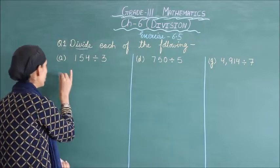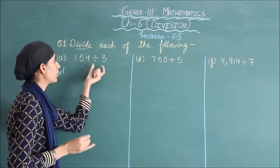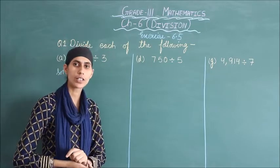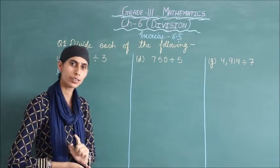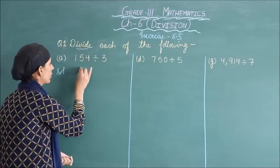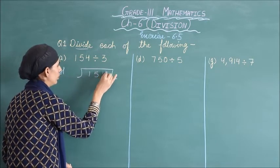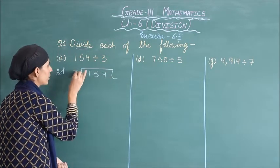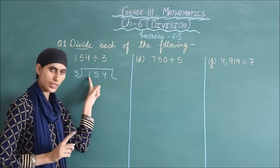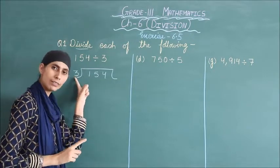So, the first part is 154 divided by 3. 154 को 3 से divide करना है. So, write it down: 154, and 3 is your divisor.